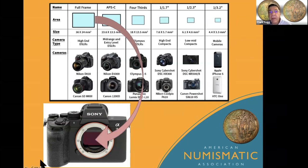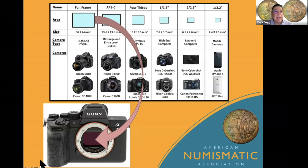It goes all the way up to the higher-end mirrorless cameras, which have what's called the full-frame sensor. A full-frame camera mimics 35mm film — the sensor is approximately the same size as what you would get in a 35mm photograph on a film camera. Technically, the bigger the sensor, the crisper the photo and the more you can enlarge it.